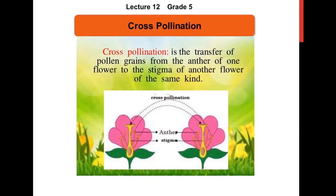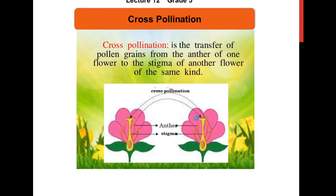The second type of pollination is cross-pollination. Cross-pollination is the transfer of pollen grains from the anther of one flower to the stigma of another flower of the same kind. Remember, it is of the same kind but not the same plant. Look — these are two flowers of the same kind; these are the anthers and this is the stigma, and the pollen from the anthers is being transferred to the stigma of the other flower. These are the two types of pollination.